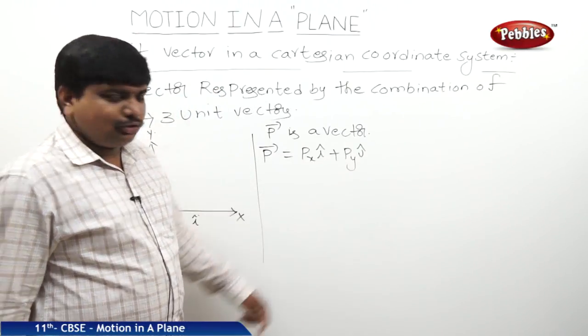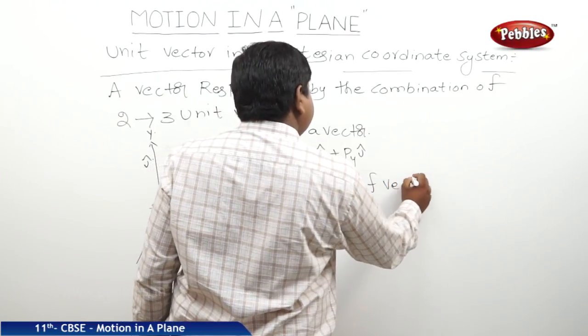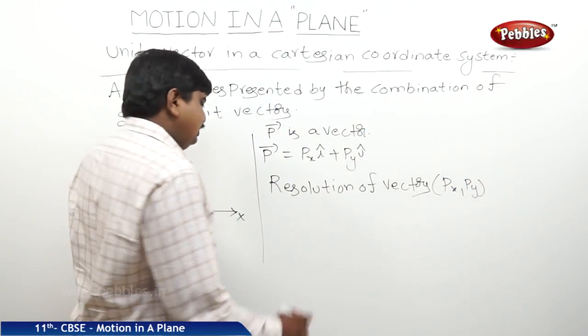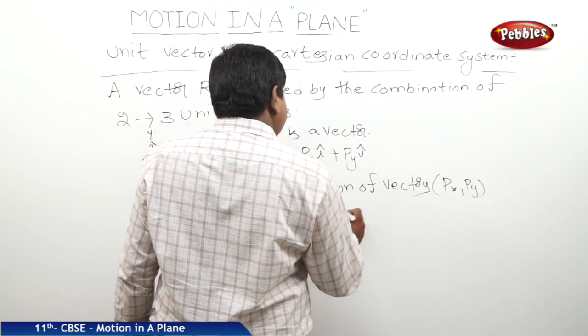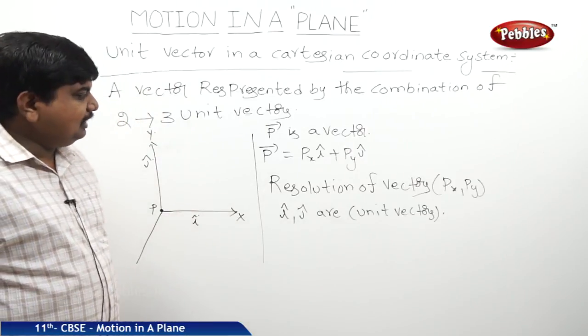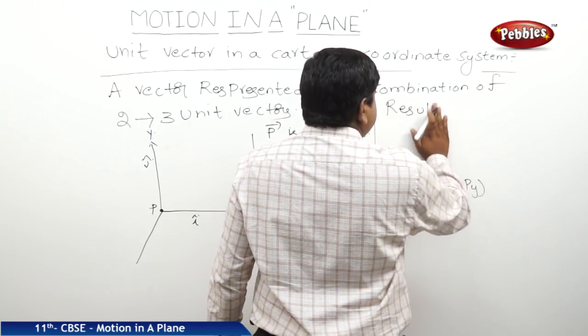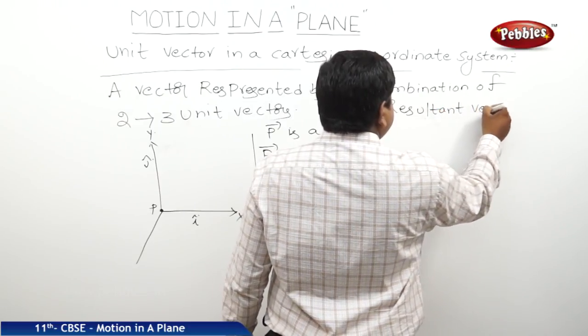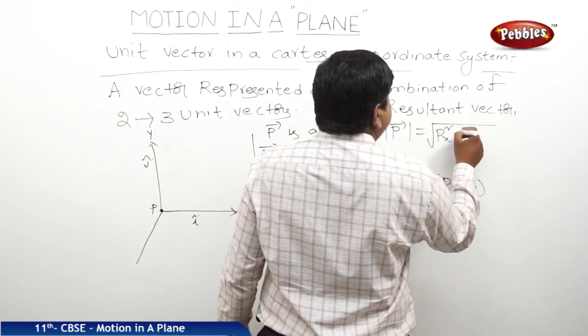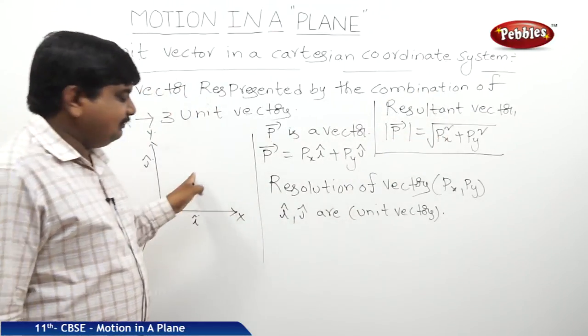Px and Py are said to be resolutions of vectors. I and J are said to be unit vectors, i cap and j cap are unit vectors. Suppose if you want to find out the resultant of this Px and Py, the resultant vector, modulus of P bar is equal to square root of Px square plus Py square. This is the way to find out the resultant vector for a given physical quantity.